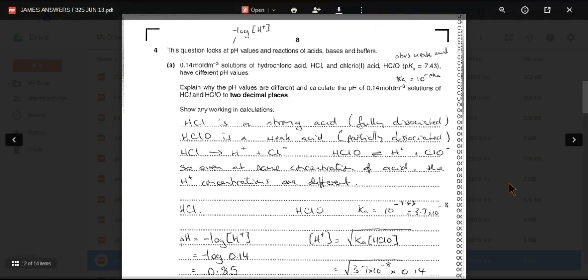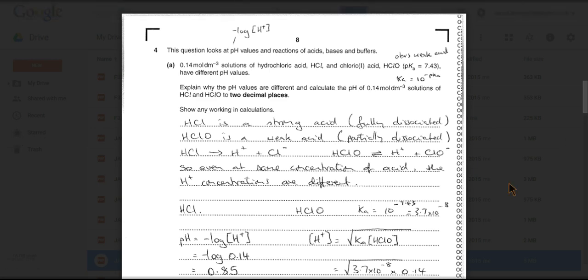Question 4 is a big pH question, pretty much testing everything on acids and bases and buffers. We're going to start off by calculating the pH of two different acids and we need to explain why the pHs are different even though their concentrations are the same.